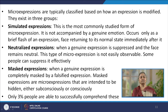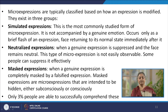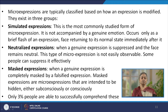Micro expressions are further classified in various ways. Largely, they exist in three groups: simulated, neutralized, and masked expressions. Simulated expressions are the most commonly studied forms; they are not accompanied by a genuine emotion — they are like an affect display — occurring only as a brief flash of an expression, after which the face returns to its normal state. A neutralized expression occurs when a genuine expression is suppressed and the face remains otherwise neutral; this type is not easily observable and some people can miss it altogether. A masked expression is when a genuine expression is completely masked by a falsified expression, and these are intended to be hidden either subconsciously or consciously.